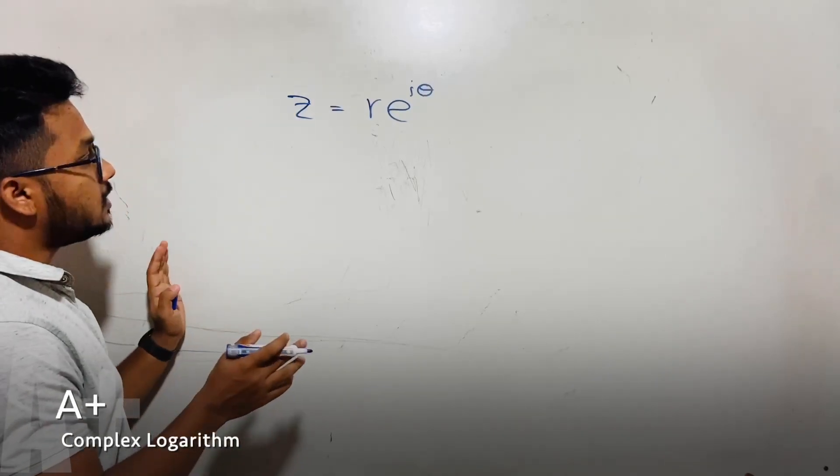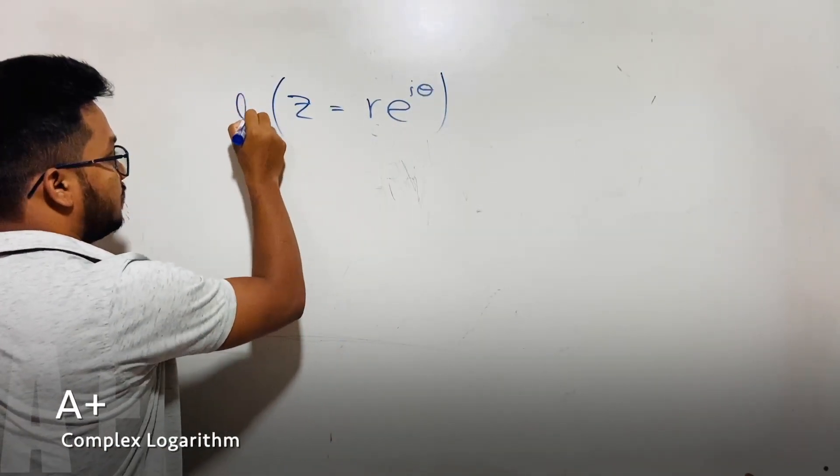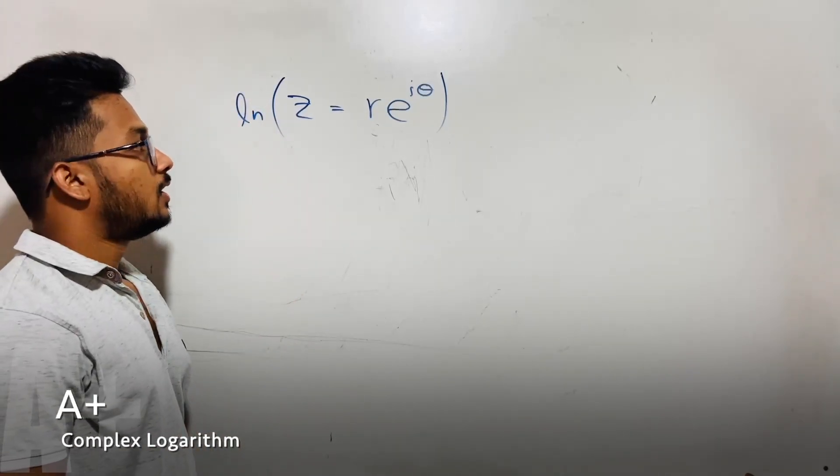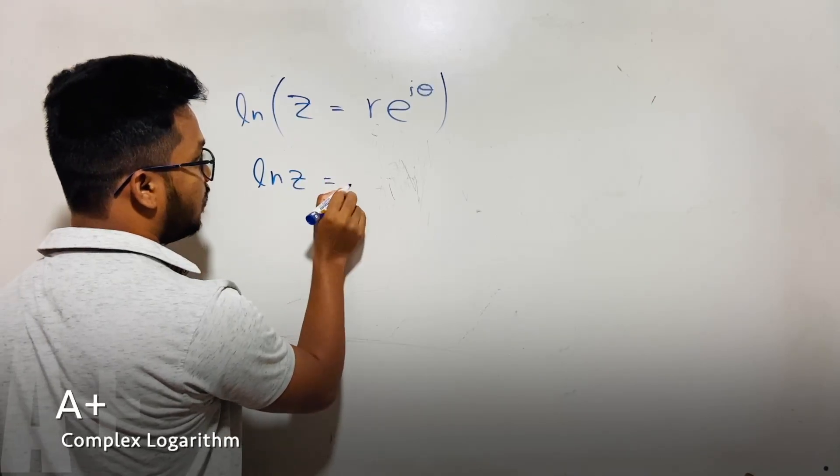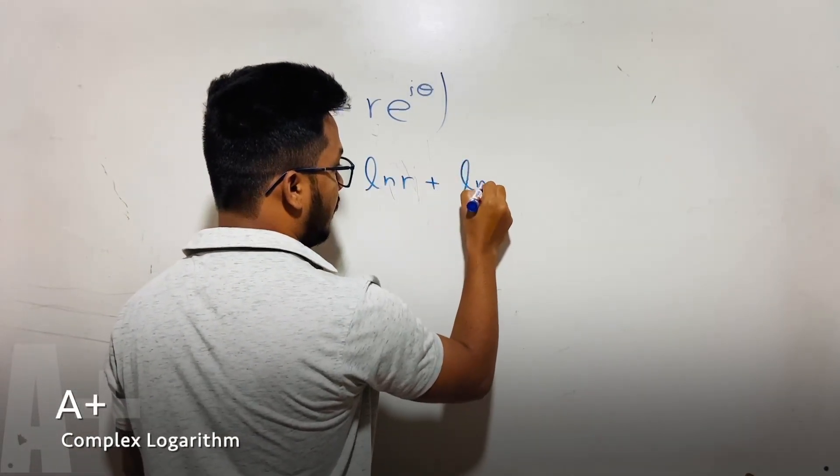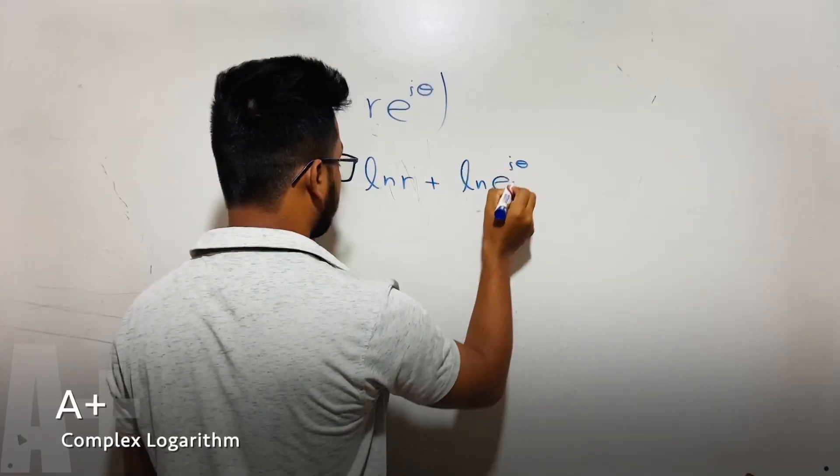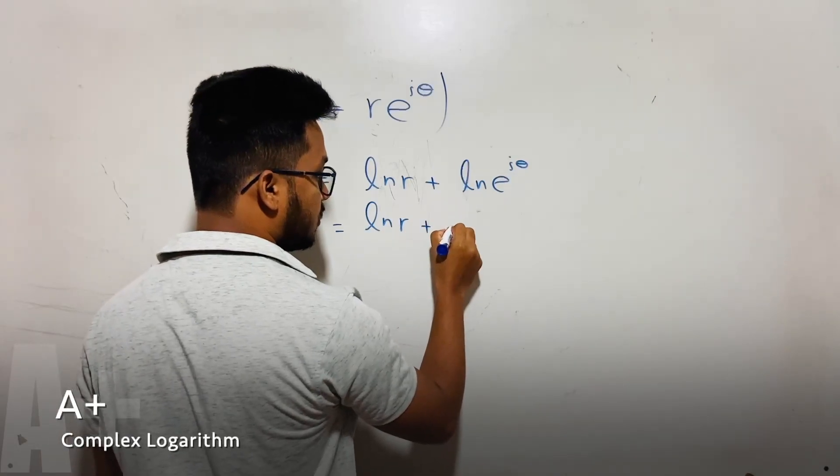So now what I'm going to do is take the ln on both sides. Okay, now I can simplify this. ln z equals ln r plus ln e to the i theta. This gives us ln r plus i theta.